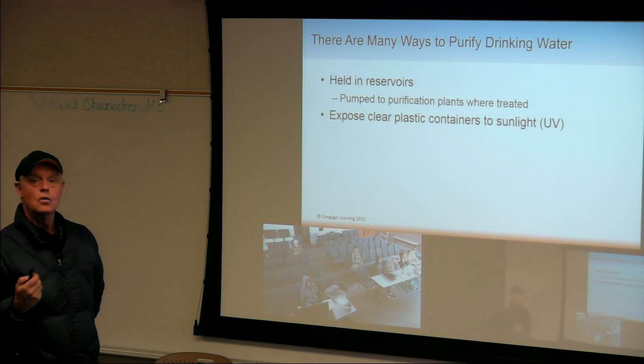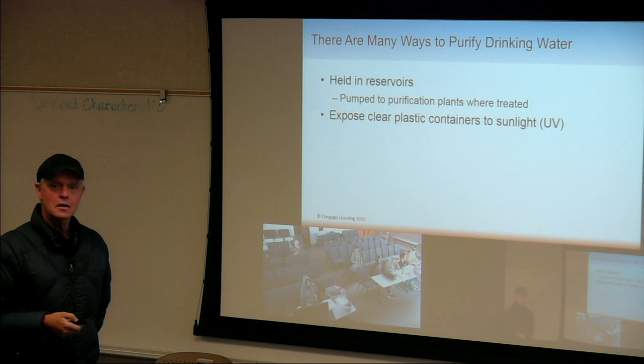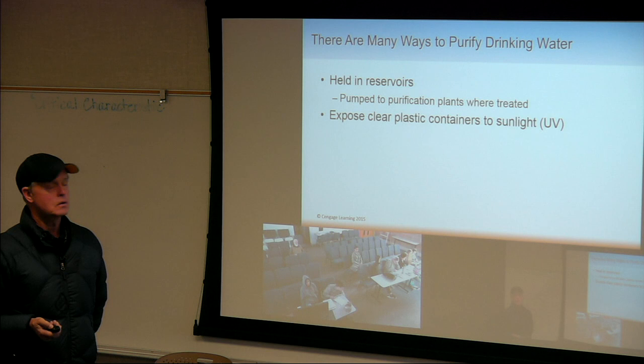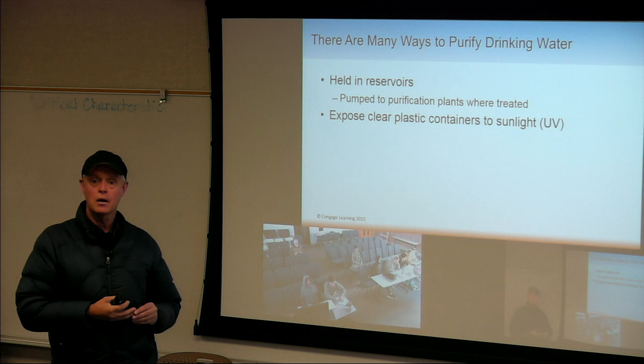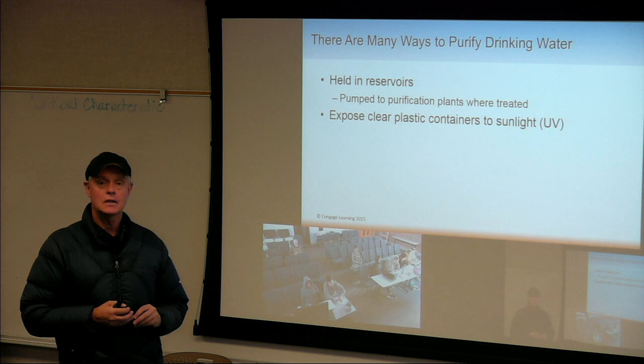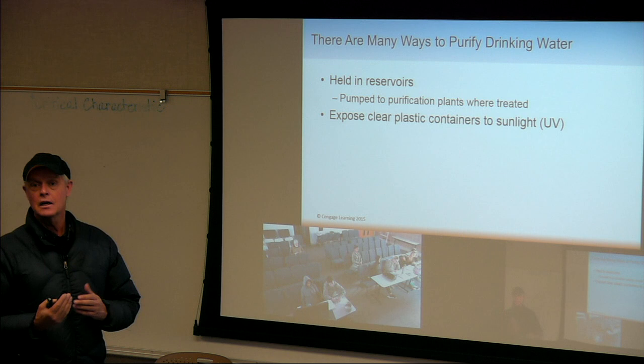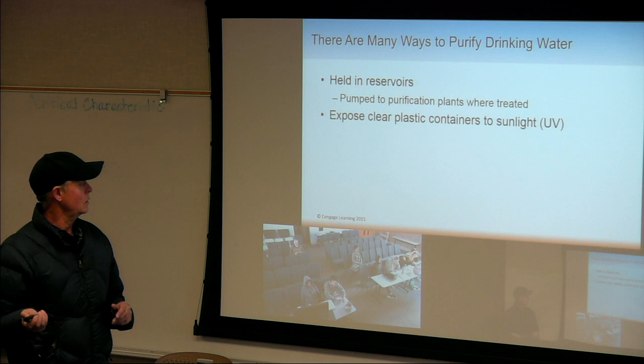Drinking water is held in reservoirs, and most cities don't have to do much. Some local companies add a little bit of chlorine just to get rid of some of those coliform bacteria. In other parts of the world, the easiest way is to put water in a clear plastic bottle where UV light can kill those bacteria. At Victor Valley Wastewater Reclamation Authority, their final stage to kill extra bacteria is with UV light — and I think we visited that with you guys too.